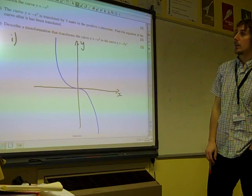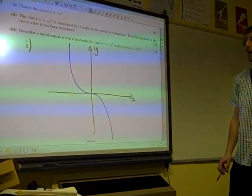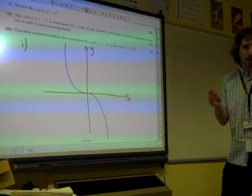The curve is translated by 3 units in the positive x direction. Find the equation of the curve after it's been translated.